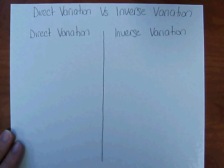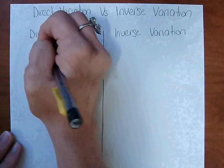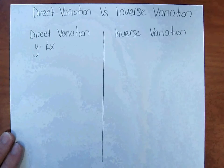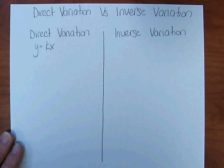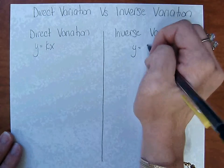Direct variation equations are in the form y equals kx. Inverse variation is in the form y equals k over x.